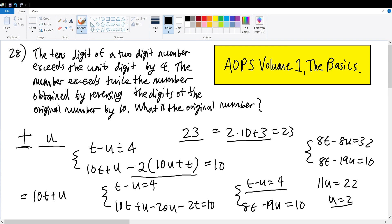What about the tens digit? We can find it through the first equation. t will equal 4 plus u. With u being 2, t will equal 6. So our original number will be 62, the answer to our question.